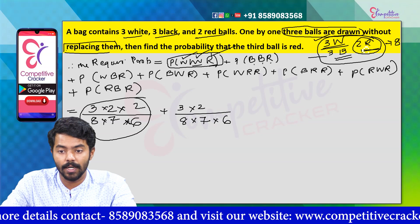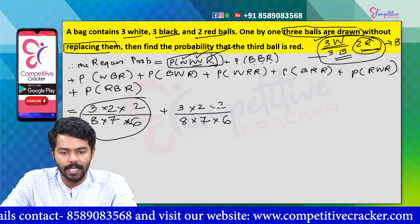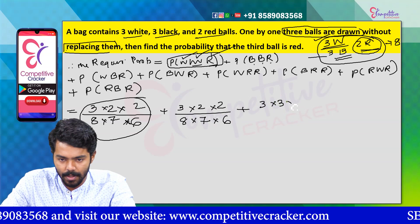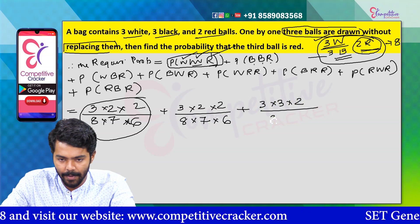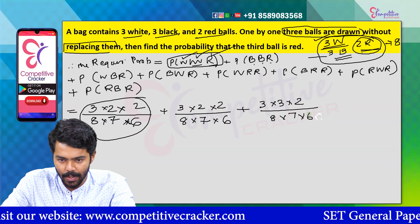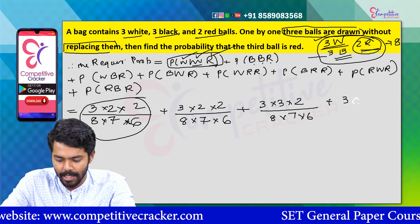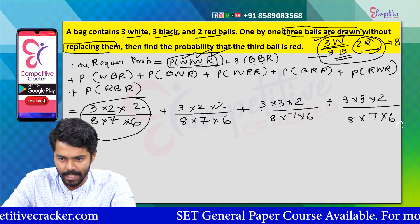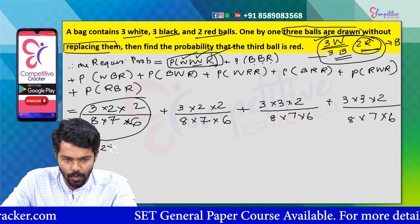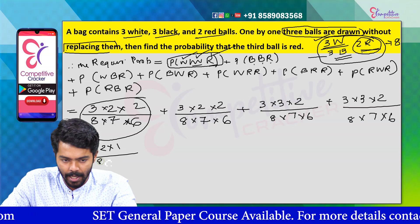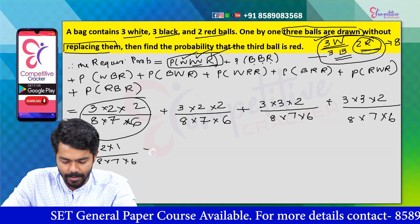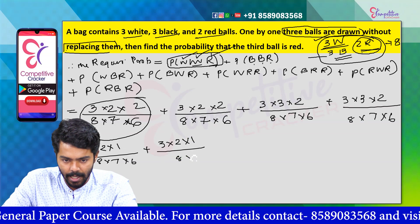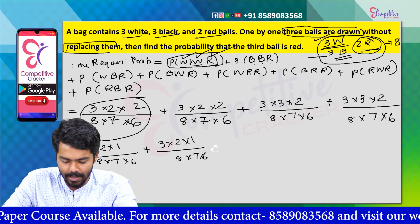The total number is 2. You can see all the other terms. The total number is 6. 3 into 3 into 2 divided by 8 into 7 into 6. Plus 3 into 3 into 2 divided by 8 into 7 into 6. Plus 3 into 2 into 1 divided by 8 into 7 into 6. Plus 3 into 2 into 1 divided by 8 into 7 into 6.